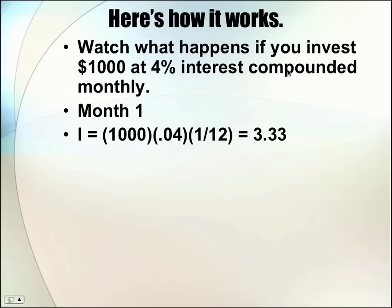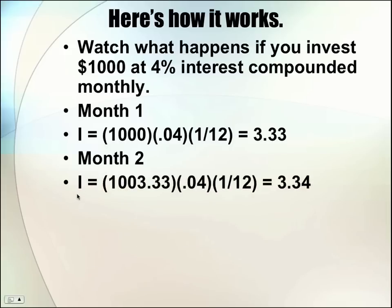Now because this is compounded monthly, in the second month, month 2, we can calculate the interest using simple interest again. However, we've now added the $3.33 to our original $1,000. So the principal is now $1,003.33. And we multiply by the rate and the time. And notice now the interest in month 2 is $3.34. It's one penny higher, even though the original amount invested was the same.